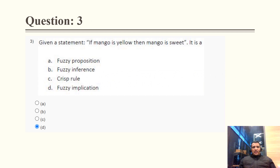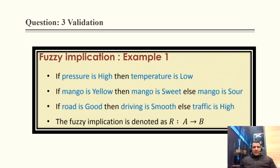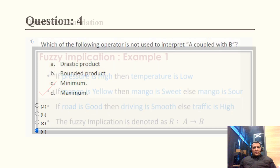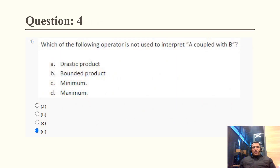Question 3: Given the statement 'if mango is yellow then mango is sweet,' this is a fuzzy implication. Option D is correct. Cross-validation: fuzzy implication examples include 'if pressure is high then temperature is low' and 'if mango is yellow then mango is sweet' — confirming it is part of fuzzy implication.